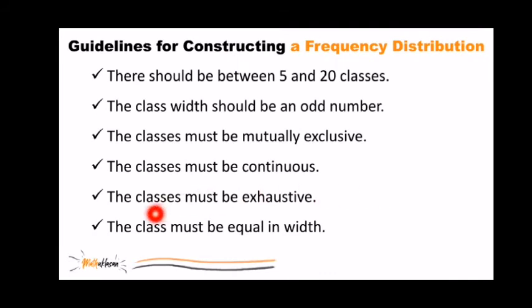Next, the classes must be exhaustive. So in your frequency column, there should be no zero or else the class limit paired with that zero becomes nonsense. So if you get a zero frequency, maybe you chose the wrong number of classes. And of course, the last one, the class must be equal in width.